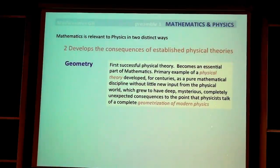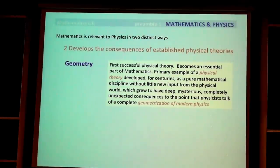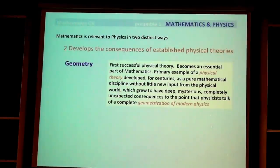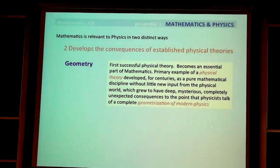The first example is geometry itself. Geometry was a physics of space. Originally there was nothing else — it was about the physics of space — and then later it became a mathematical theory. After the basics of the Euclidean theory were established, reduced to axioms, there was a well-established physical theory that was developed for centuries, even thousands of years, into a mathematical theory.